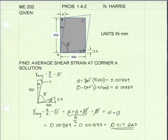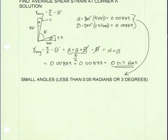Alpha plus beta equals 0.017, and the units are radians. And the problem is done. But wait, there's something that's important to discuss. Alpha and beta are both small angles.